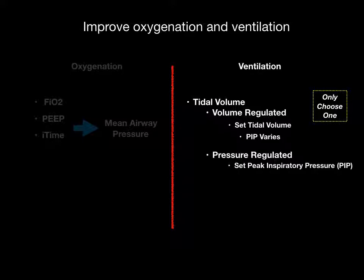In pressure-regulated mode, you tell the machine to deliver 20 centimeters of pressure every time the patient takes a breath, and the tidal volume varies. Based on the compliance of the lung, it may be 300 milliliters, 250 milliliters, or 500 milliliters. Why you choose volume regulated versus pressure regulated depends on a whole host of factors, but it usually comes down to provider preference.